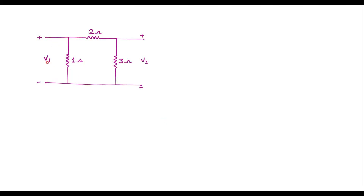Let V1 be the input voltage and V2 be the output voltage. Let I1 be the current at the input port and I2 be the current at the output port. We can observe that the voltage at this node is V1 and the voltage at this node is V2.